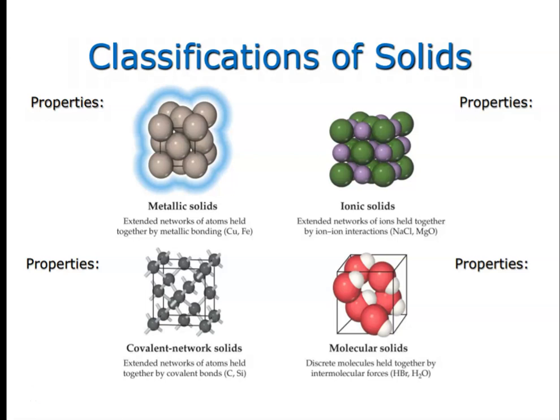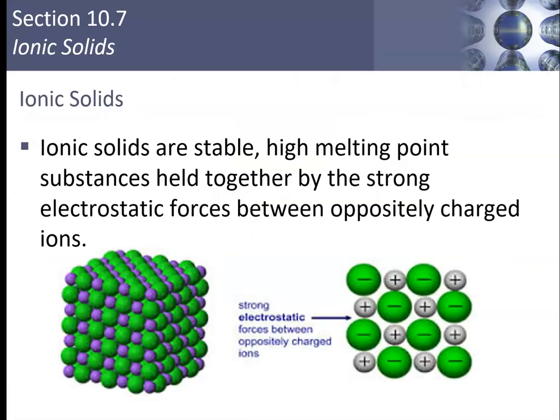In first-year chemistry, we discuss bonding in terms of ionic solids, molecular solids, and metallic solids. We do a lab where we investigate some of the properties of ionic solids versus molecular solids in terms of melting points and conductivity. I want to review that so we can expand upon the topic and talk about covalent network solids, alloys, and polymers in AP chemistry.